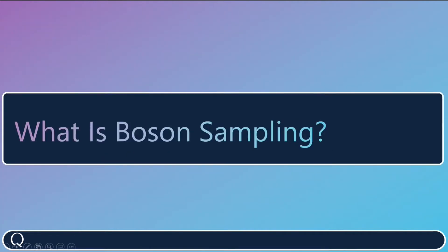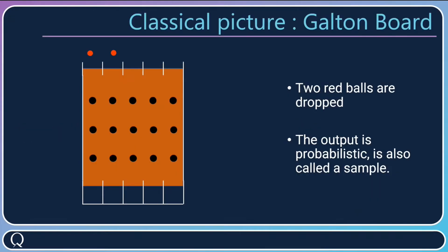First I will speak to you about boson sampling. When you want to understand what is boson sampling, I think it's good to have in mind the classical picture that is a Galton board. You have a board with pegs, red balls on top, and at the bottom you have boxes. The red balls will be dropped and they will be deflected at the pegs and they will land in some boxes.